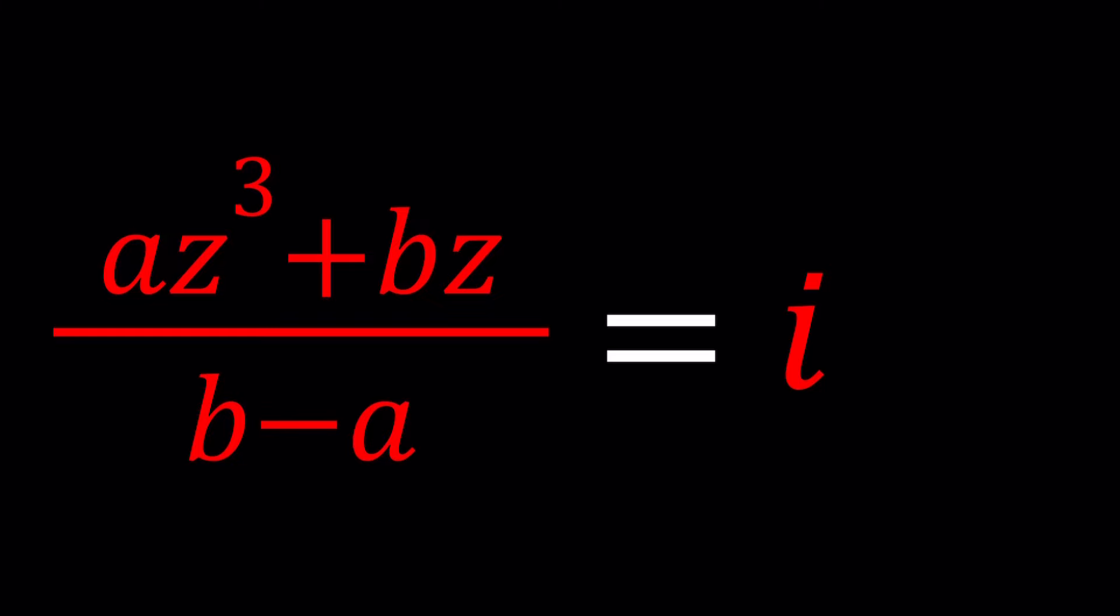Now we're going to be solving this equation for Z where A and B can be considered different parameters. For example, what would happen if A and B are both 1? Then we get a solution for Z. What happens if they're both 2 or one of them is 2, the other one is 3? We get another solution. So we basically get a family of solutions for different values of A and B.